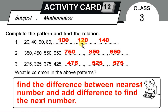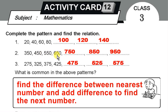120 plus 20 is 140. The second one: 350, 450, 550, 650. Looking at the pattern: 325, 375, 425 — this is how the difference works. 325 and 275 — this is how the difference is shown.